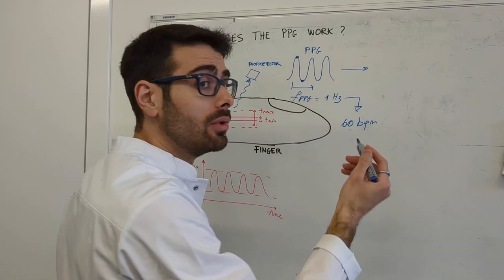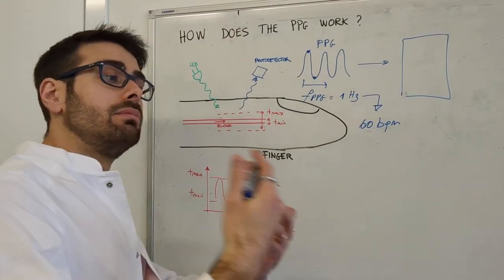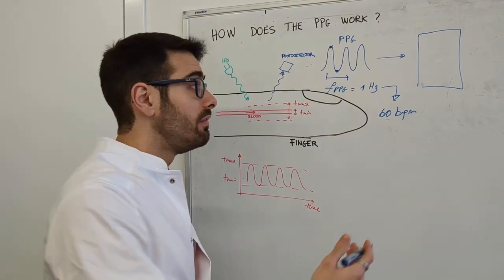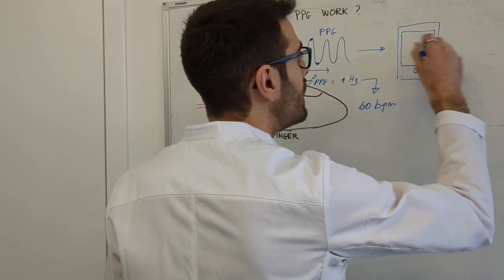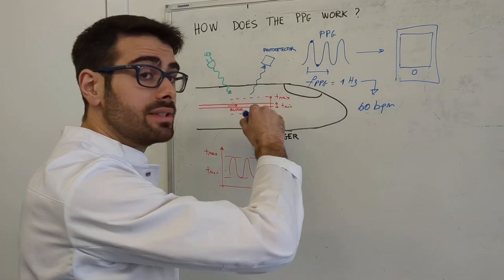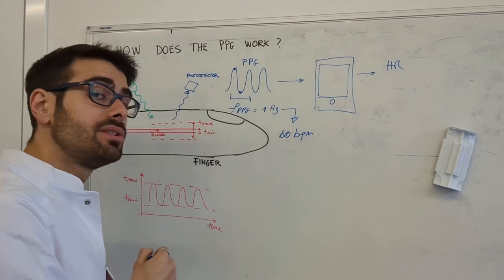We get there thanks to the algorithm. You download the data from the ring to your phone via the application. The application will be translating the signal into heart rate data, 60 beats per minute.